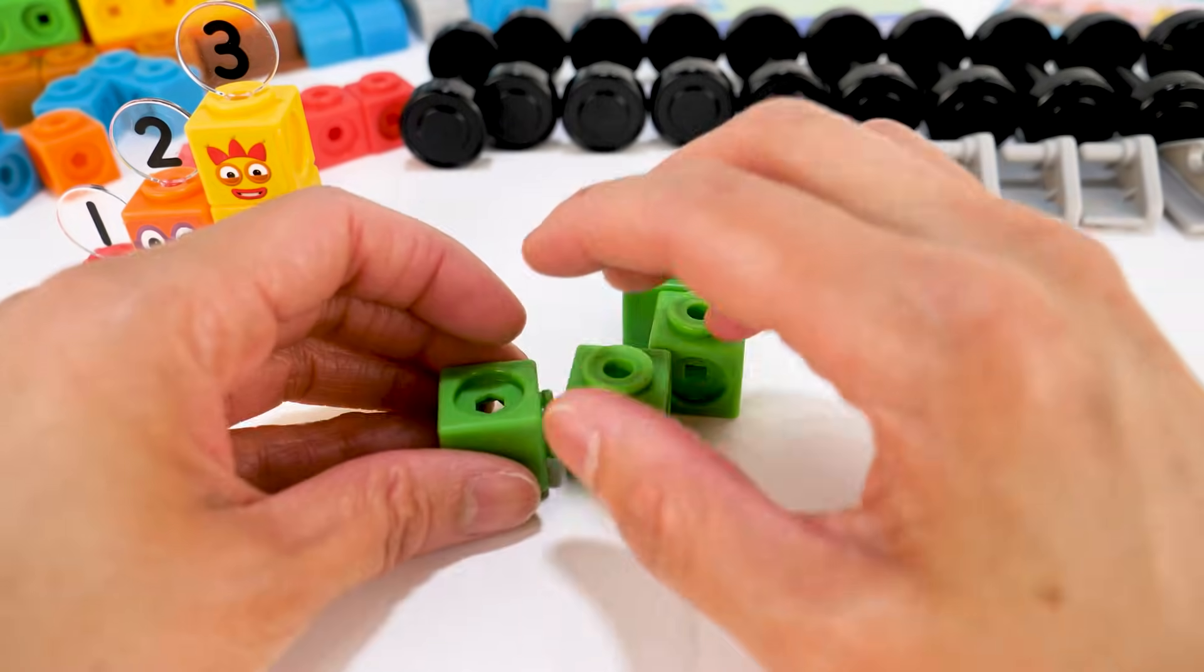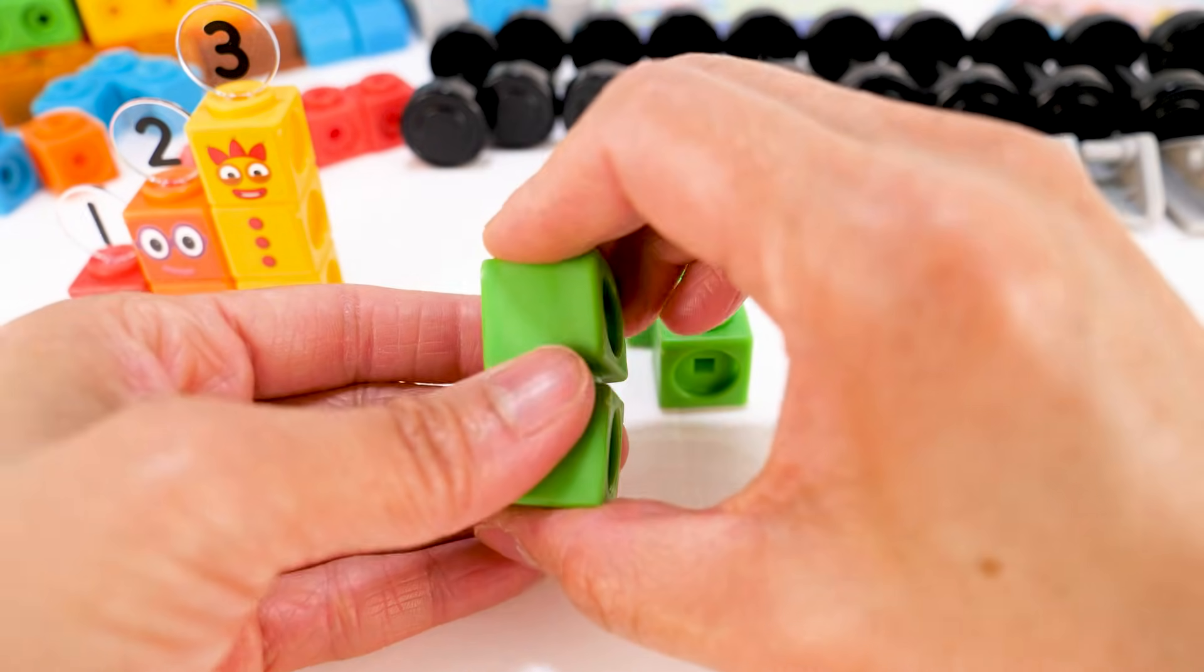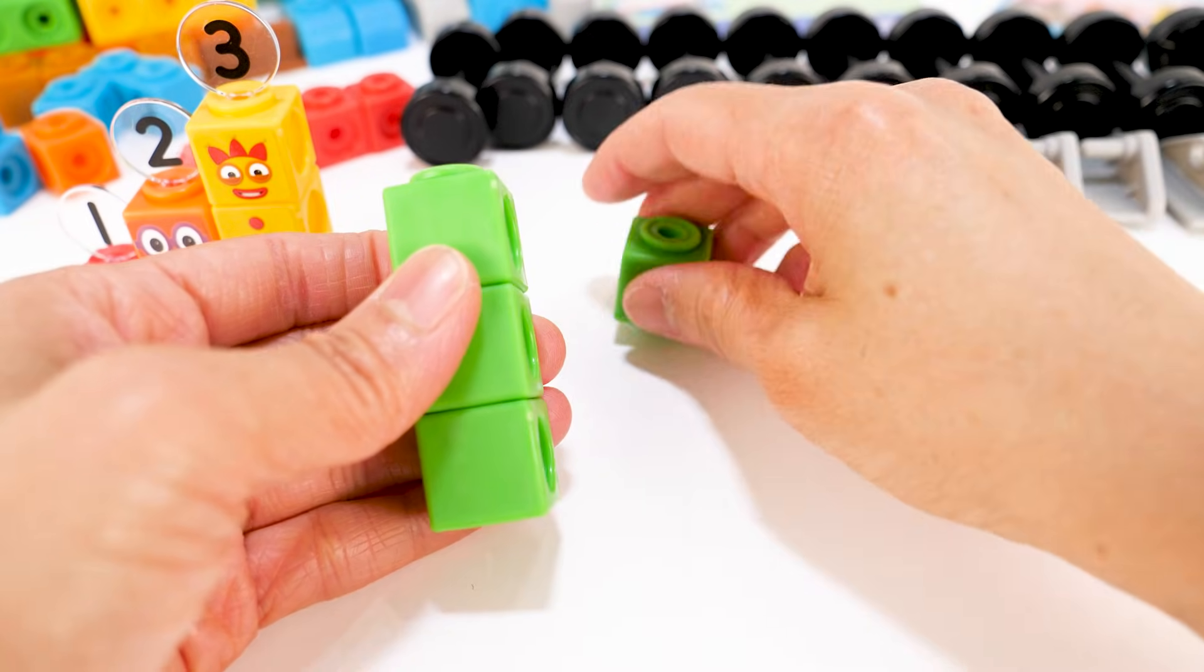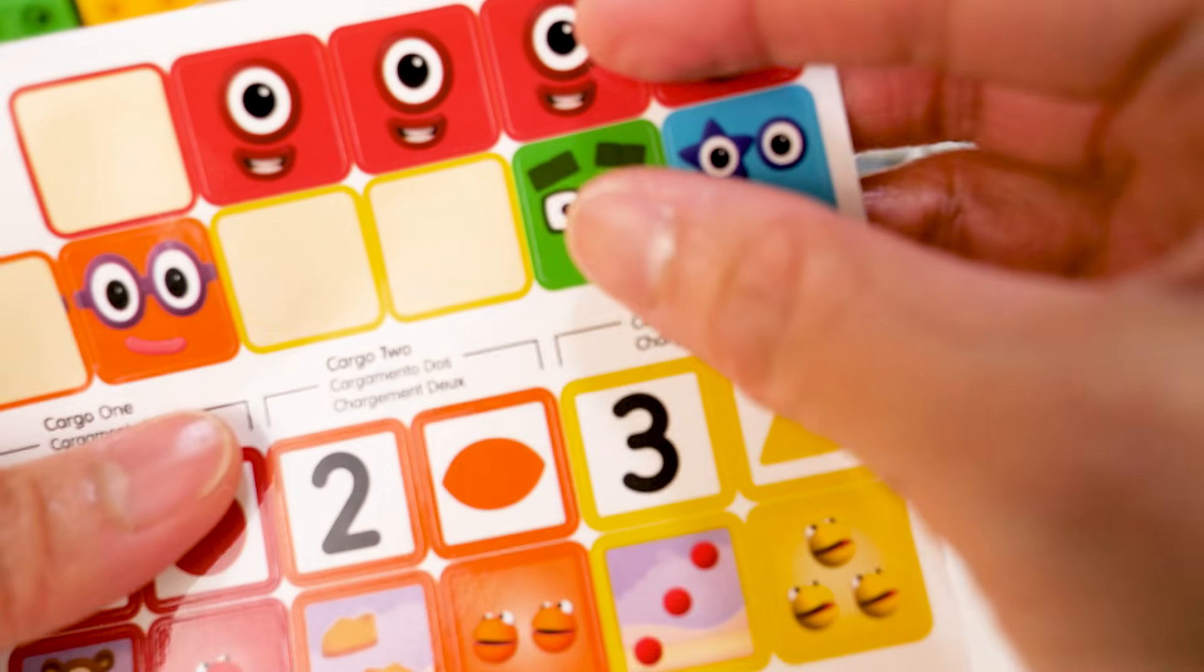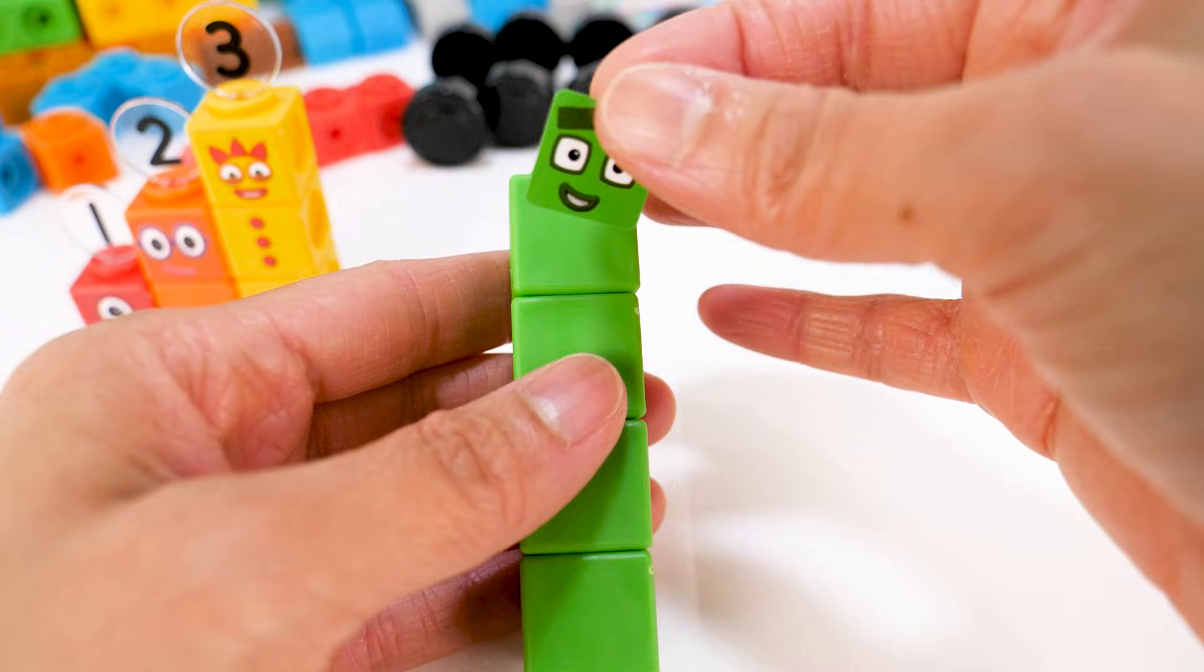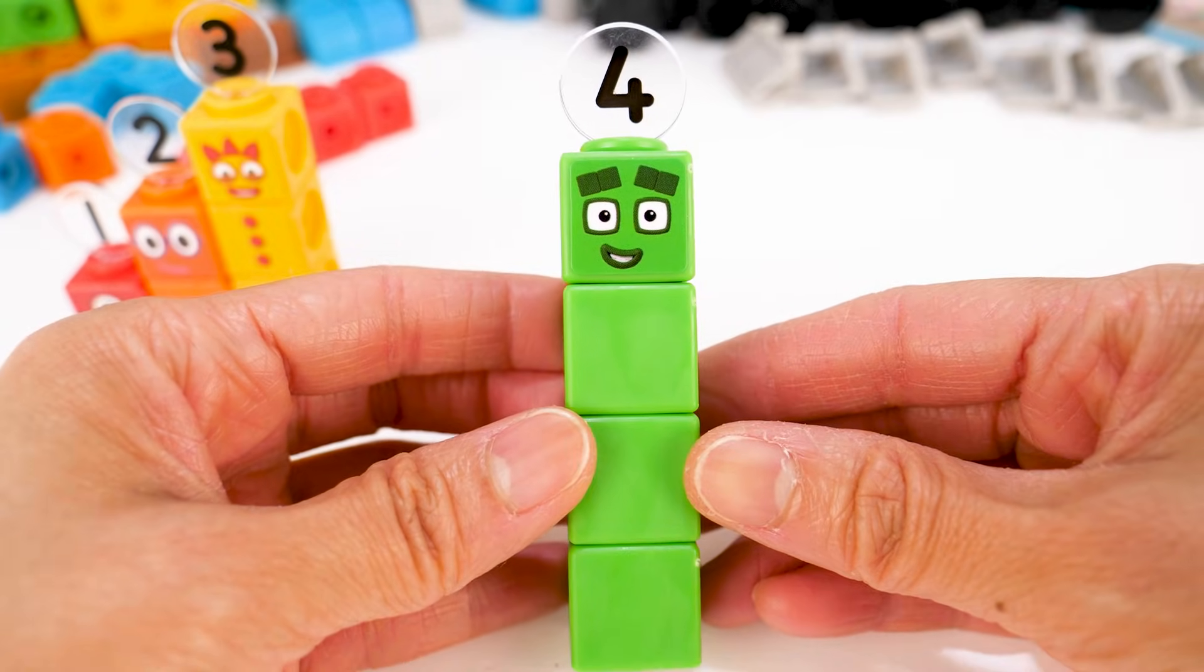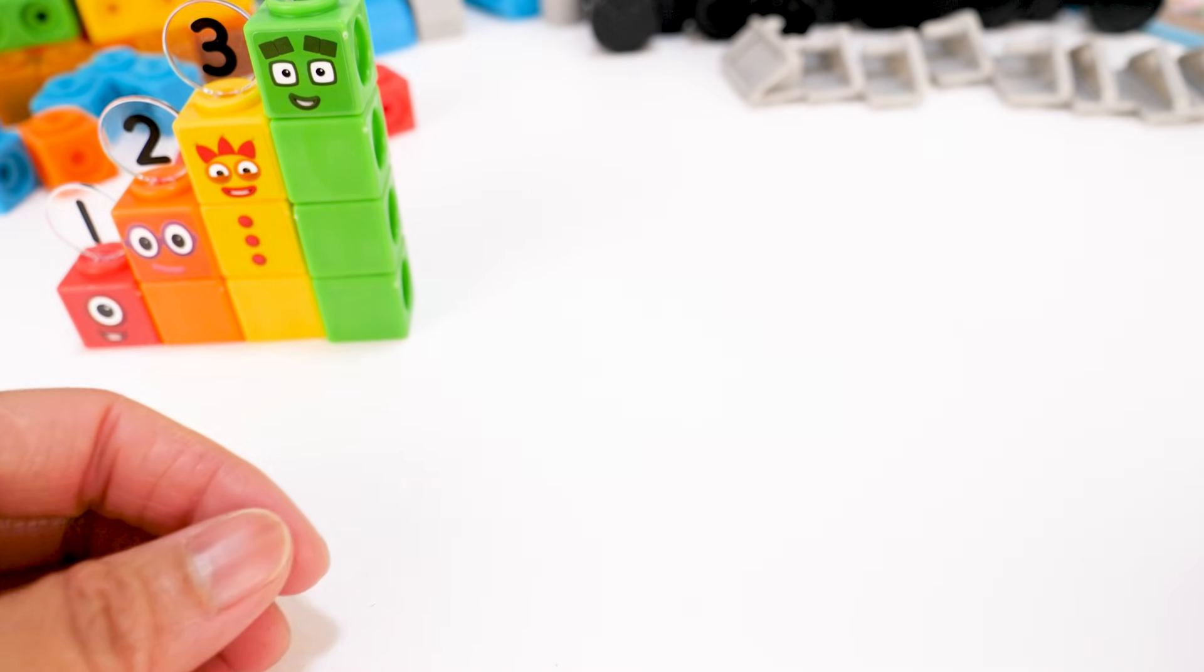Next, we are going to build number block 4. A face sticker for number block 4. Let's put on his numbering. Here we have number block 4.